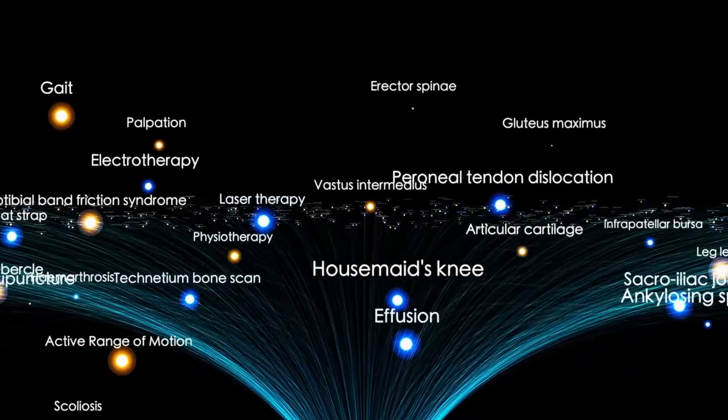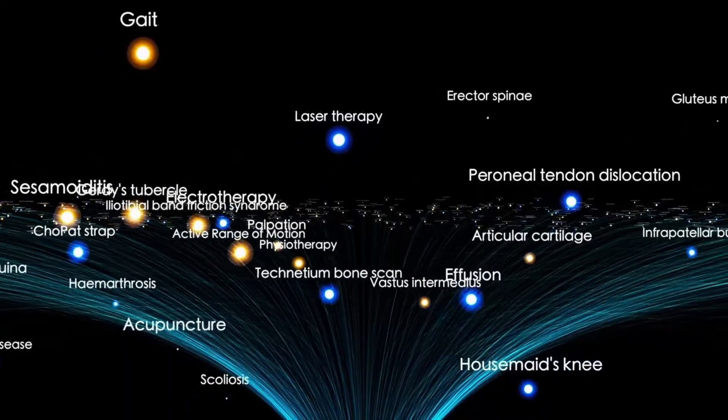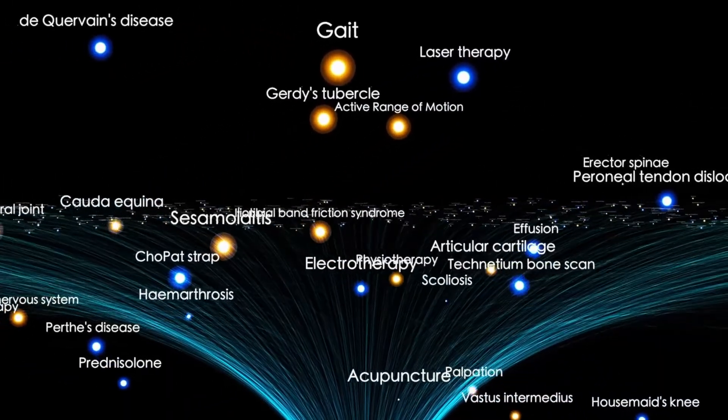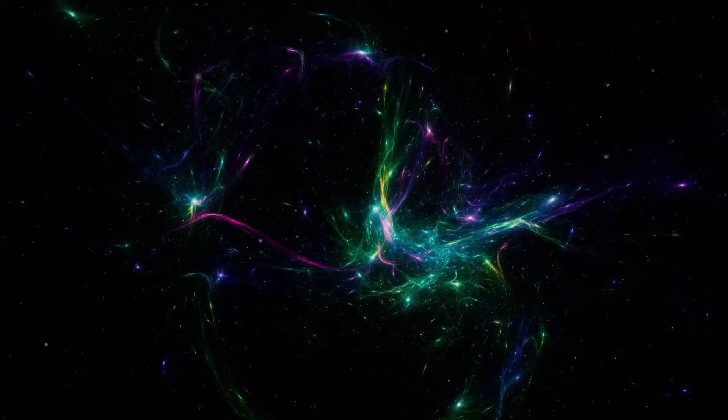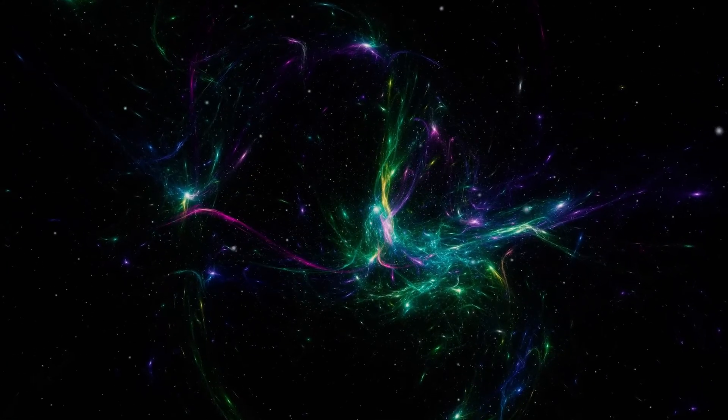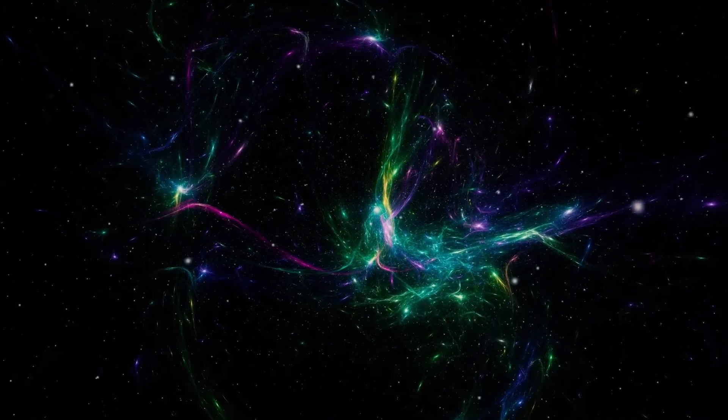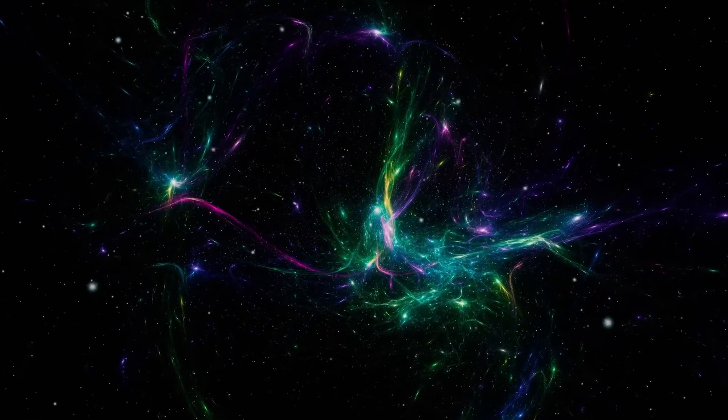If this is true, then interstellar objects like Oumuamua, Borisov, and Three-Eye Atlas aren't just drifters. They may be the sparks that ignite planetary systems. Some might have seeded gas giants in faraway systems. Others may even have played a role in our own solar system's early history.